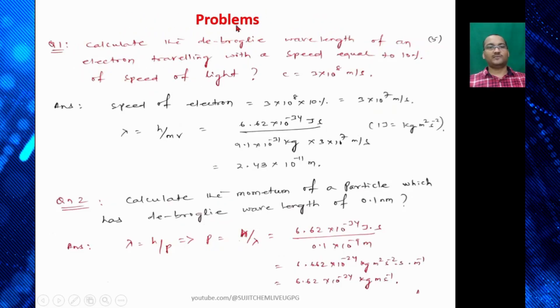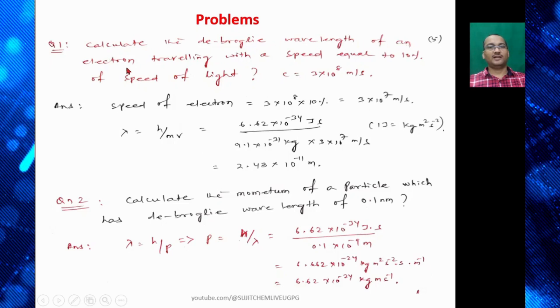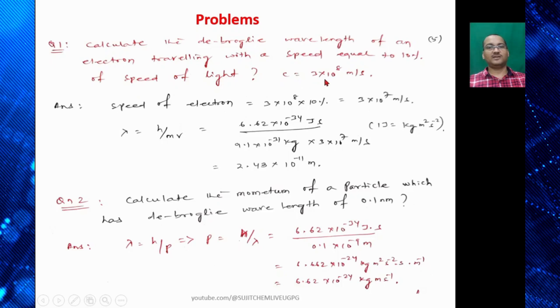So let's do some problems. Calculate the de Broglie wavelength of an electron traveling with a speed equal to 10% of the speed of light. So we know speed of light c = 3×10⁸ m/s.